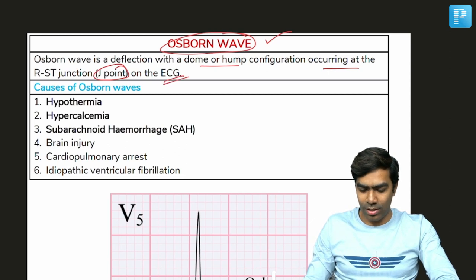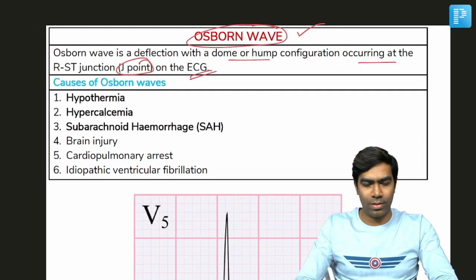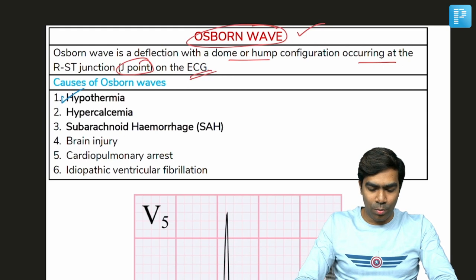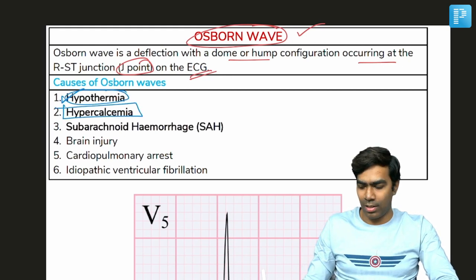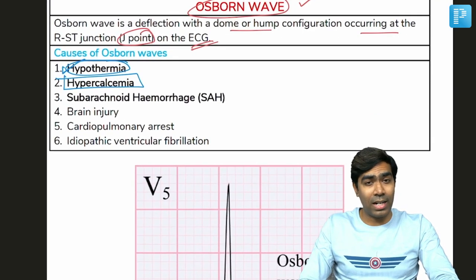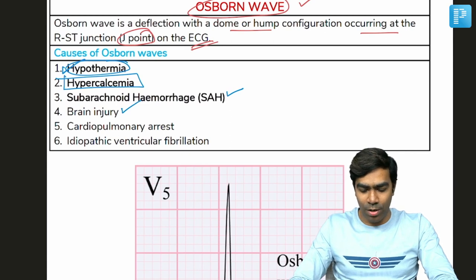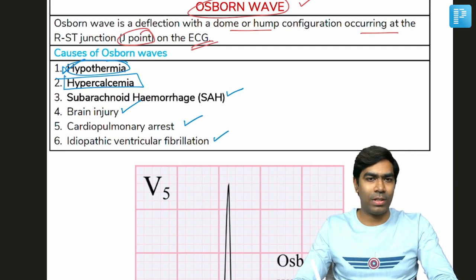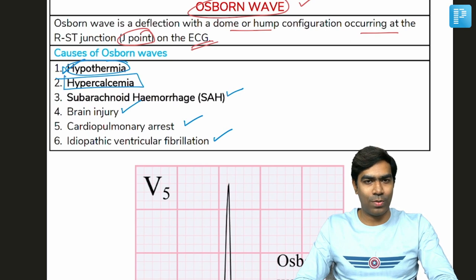So what are the causes of Osborn waves? Hypothermia, the most important cause. And it can happen in hypercalcemia. And it can happen in multiple other conditions like subarachnoid hemorrhage, traumatic brain injury, after cardiopulmonary arrest, and after idiopathic ventricular fibrillation as well.